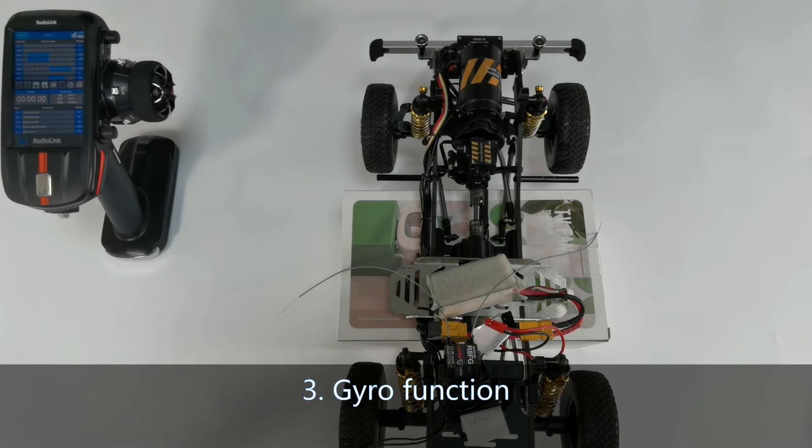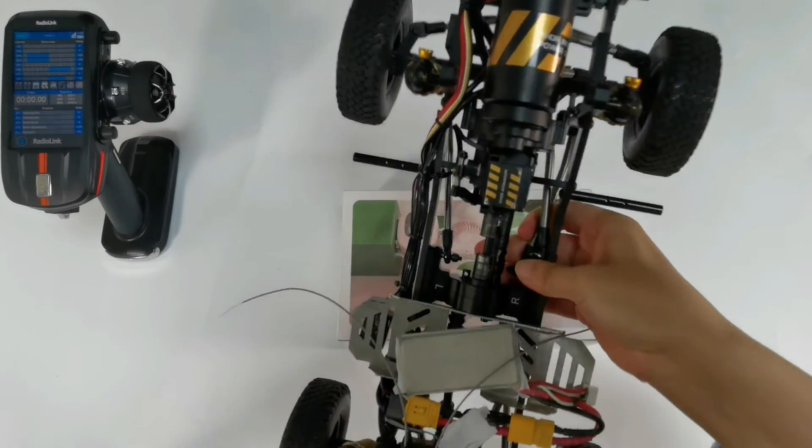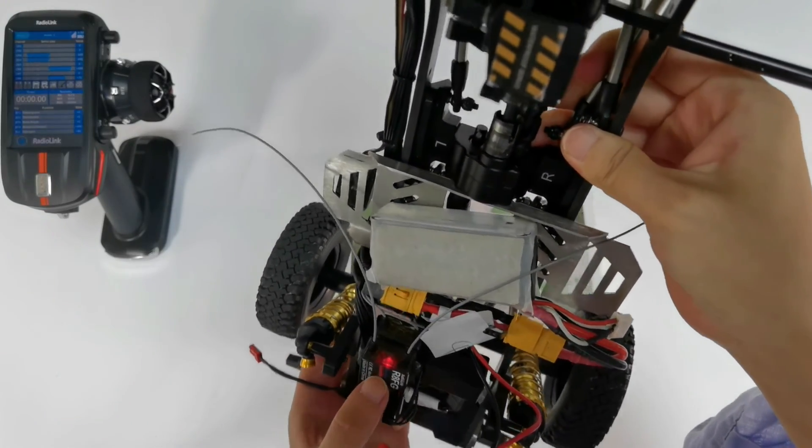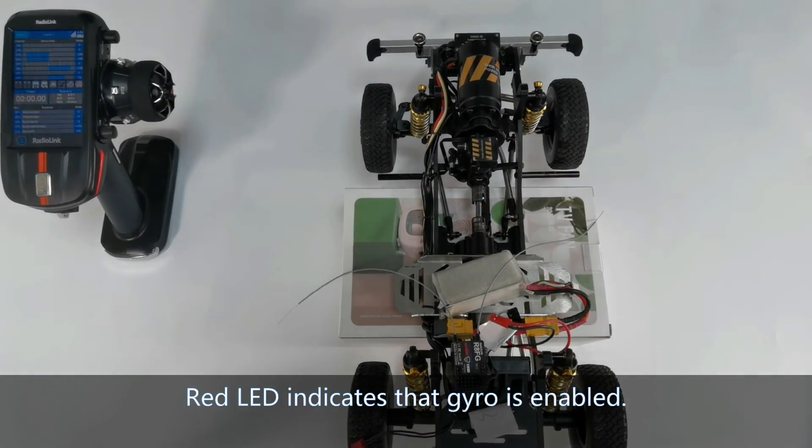Three, gyro function. R8FG variant 2.1 is installed in our car now. Steering servo is connected to channel 1 and ESC to channel 2. The gyro function is already turned on by pressing the binding button three times fast. Here, the LED indicator color is red. Red LED indicator indicates that the gyro is enabled.